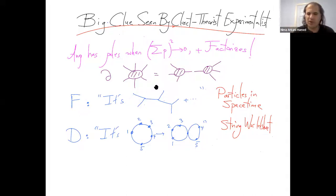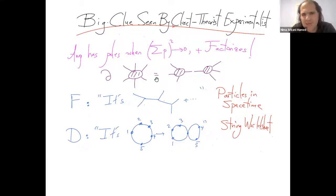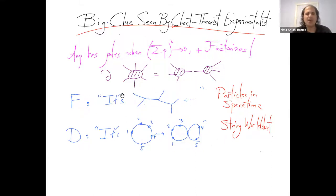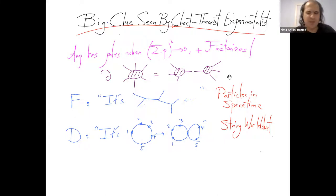Theorists in the audience react differently to the clue of factorization. One theorist named Feynman says: the amplitude is a sum over Feynman diagrams, summing over all virtual particles and all possible ways it can happen. This picture makes it manifest that there are poles in the correct spots and that they factorize on the poles. So factorization could be interpreted as the conventional picture of particles in space-time.